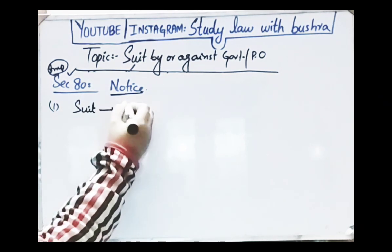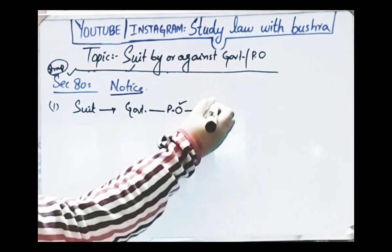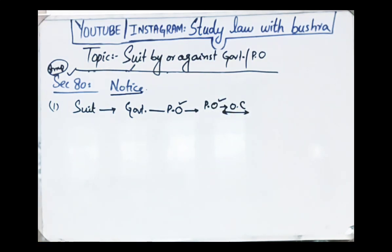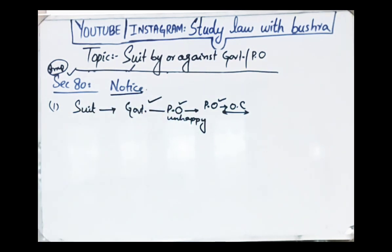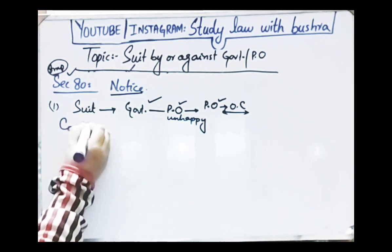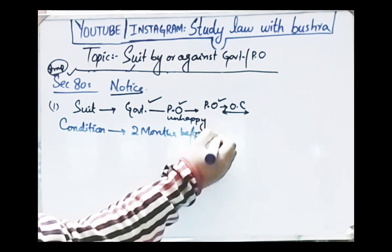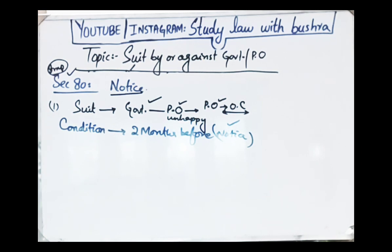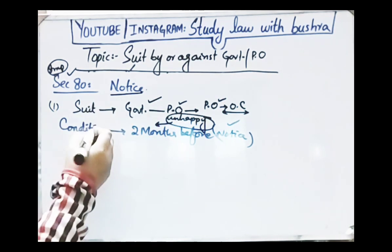Subsection 1 says that you can file a suit against the government or a public officer for any act performed by them in their official capacity — during their job. If they performed an act that you are unhappy with, you can file a suit against that government or public officer. But there is one condition: before filing the suit, you must send a notice to that government or public officer.